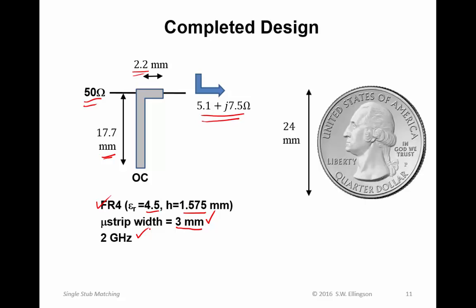Just for comparison here, I'm showing a quarter, a US 25 cent piece, which is about 24 millimeters across. So for scale here, you can see that this matching structure is quite compact. It would certainly fit inside the footprint of a quarter.